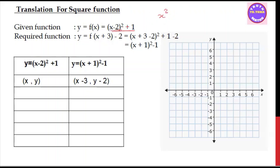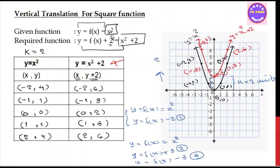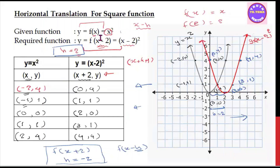You can see the main function here. This is the required function, which is x² . The required function for comparison is (x + 3) − 2. This is x squared, this is x squared plus 2. The horizontal translation is x minus 2.